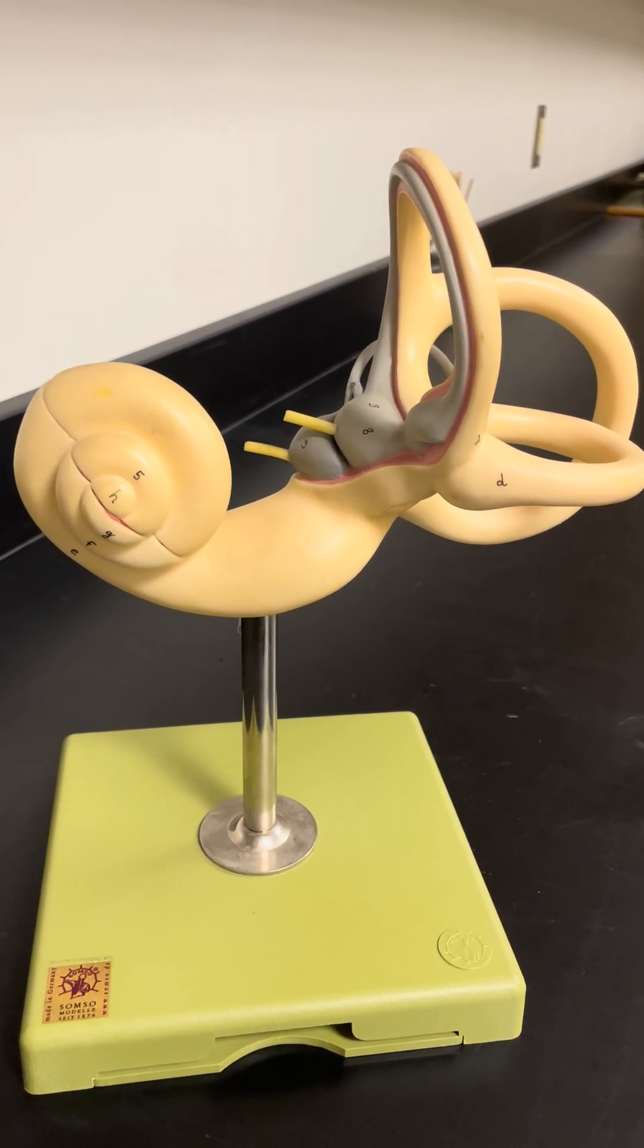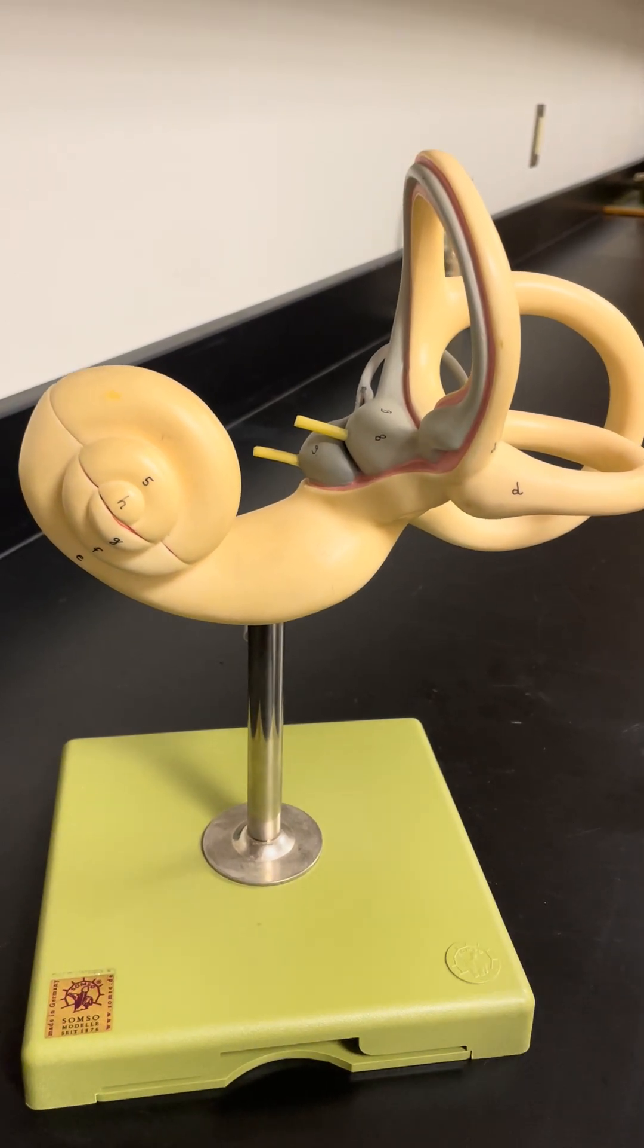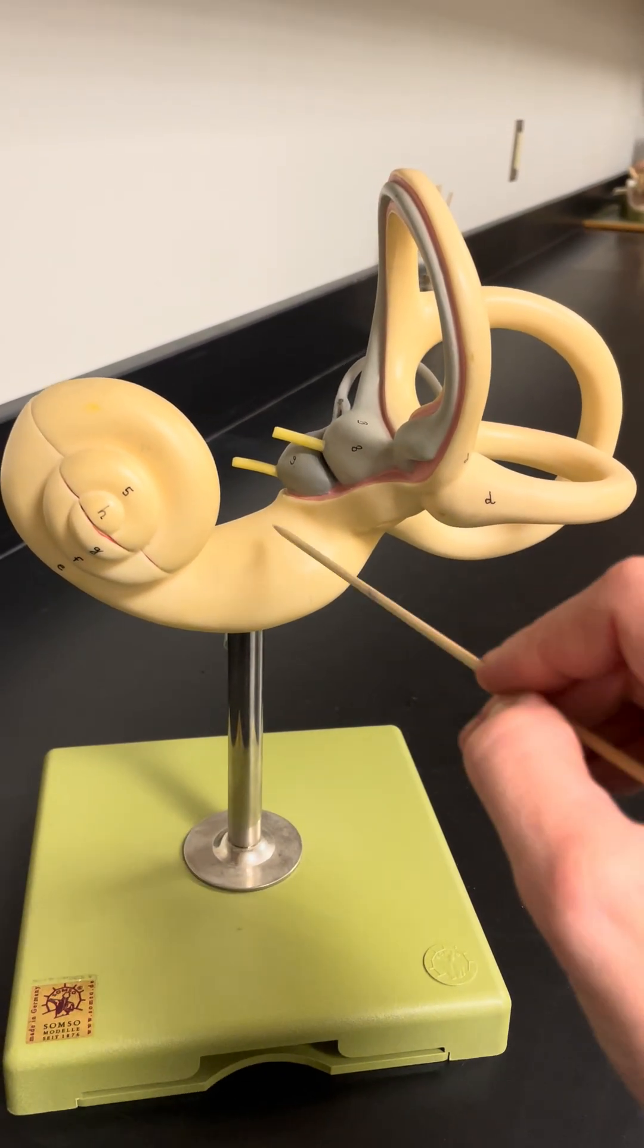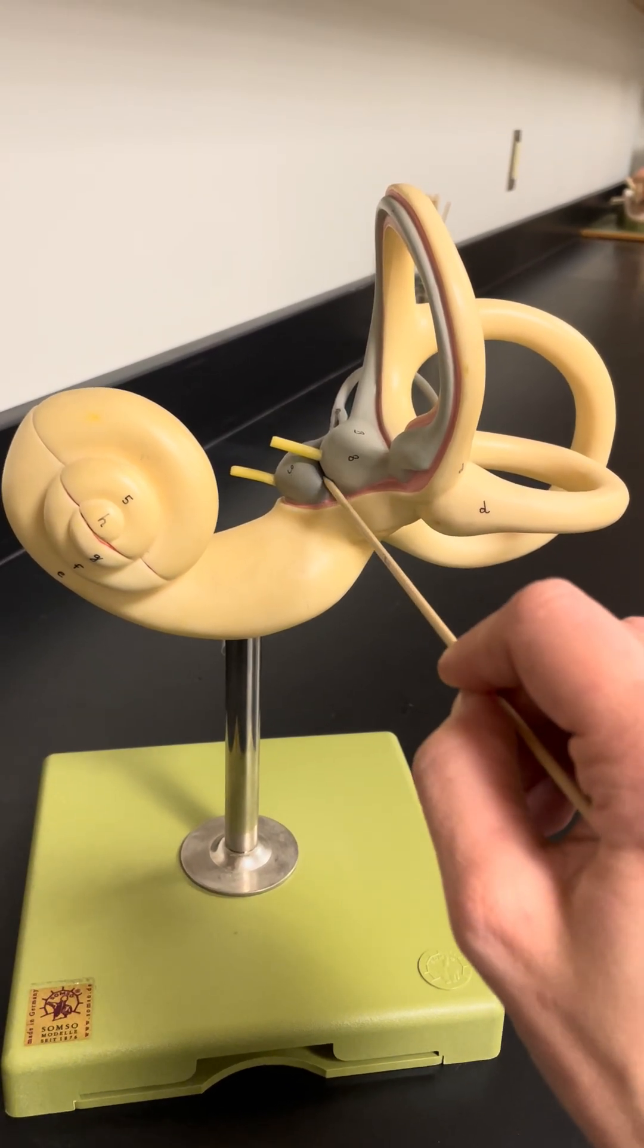In this video I'm going to show you the structures of the inner ear. This is a model of the cochlea. Here is the upper vestibule. This upper pouch of the vestibule is called the utricle, the bottom one is called the saccule.